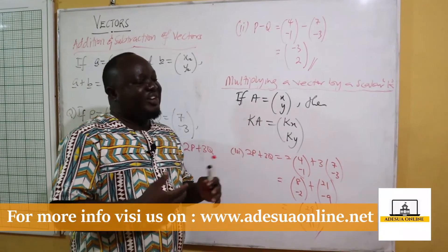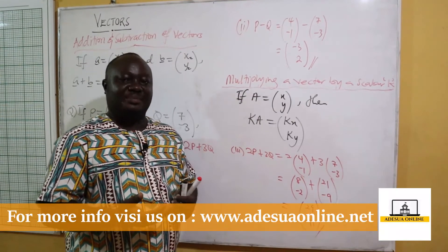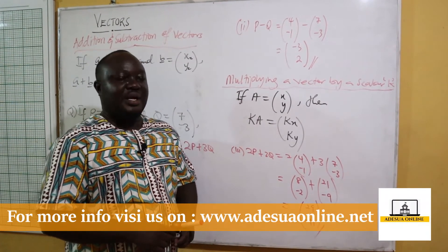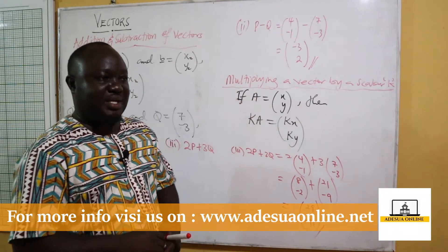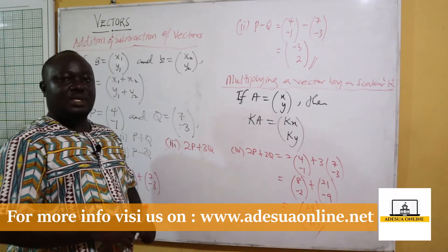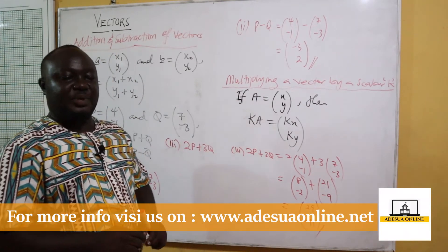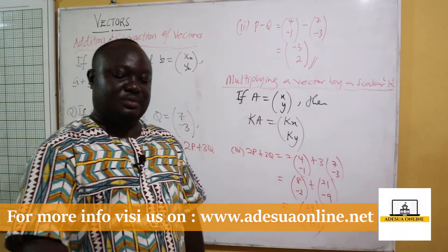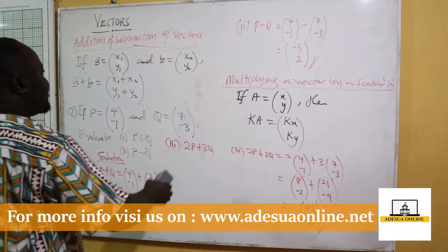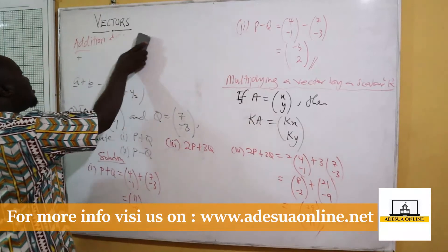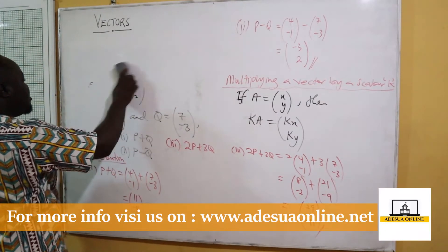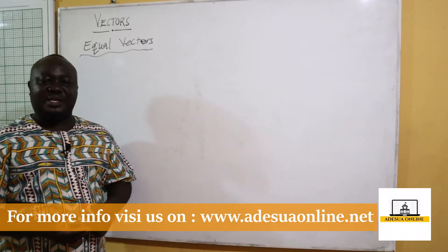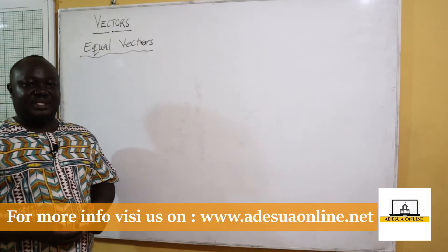So multiplying a vector by a scalar means you are multiplying the vector by a constant. Our next topic is equal vectors.